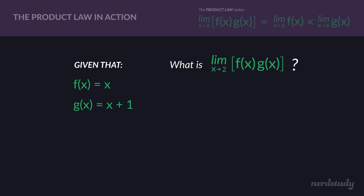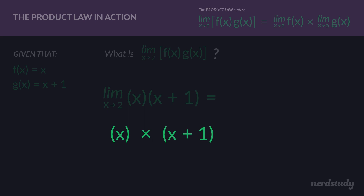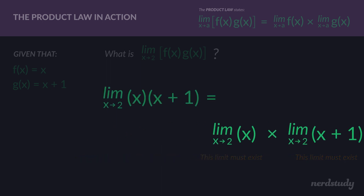In this case, f of x and g of x are already presented to us, so all we have to do is specify what they are and rewrite this. We have the limit as x approaches 2 for x multiplied by x plus 1. You can easily see this as one function being multiplied with another, and so long as these two functions separately have limits that exist, you can use the product law.